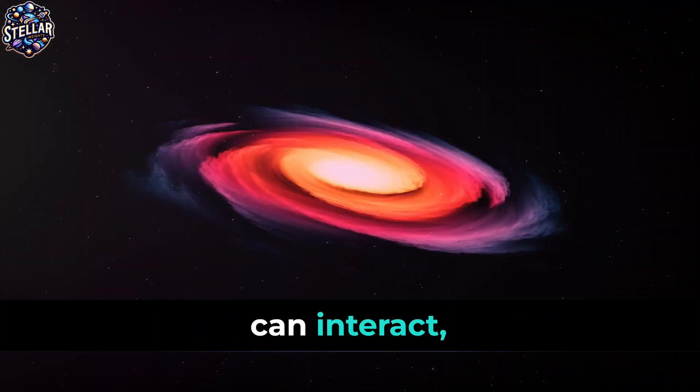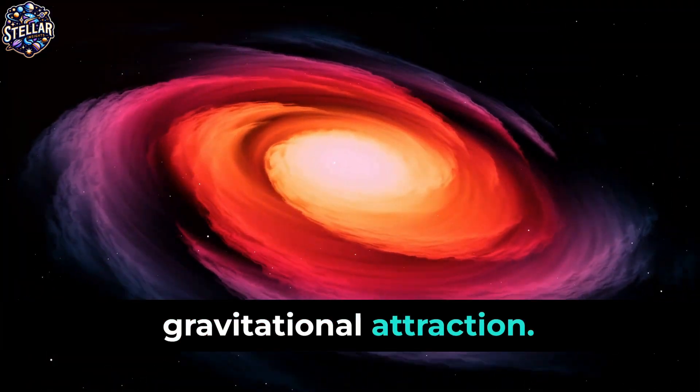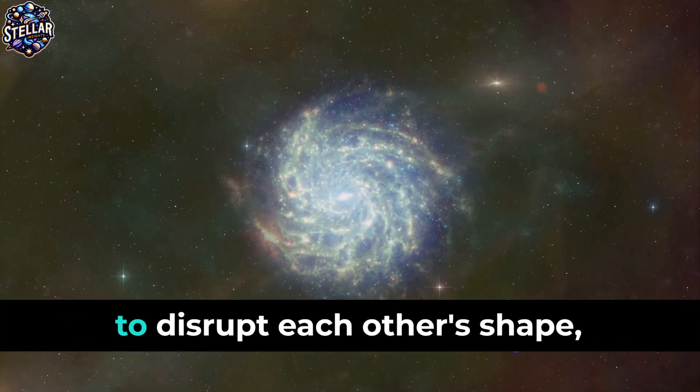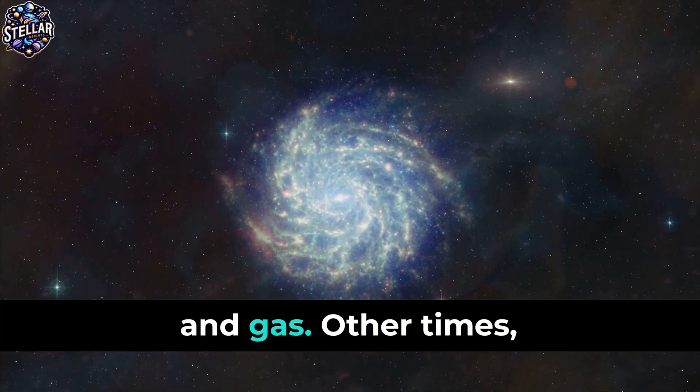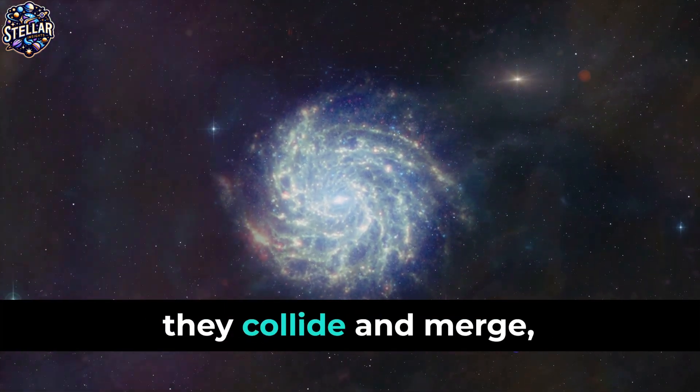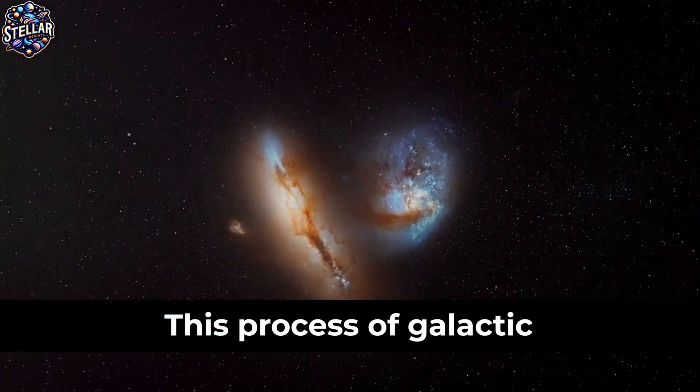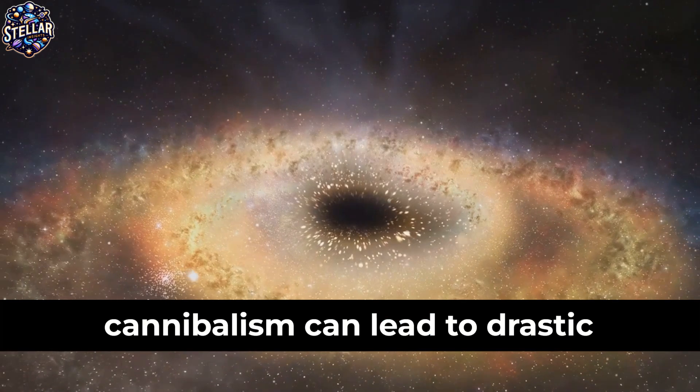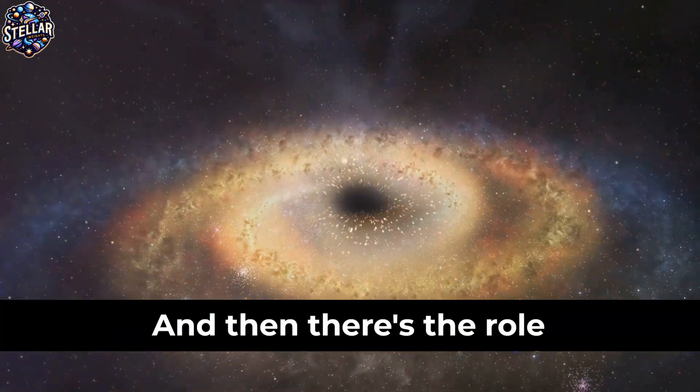Galaxies themselves can interact, drawn together by their mutual gravitational attraction. Sometimes they pass close enough to disrupt each other's shape, creating tidal tails of stars and gas. Other times they collide and merge, forming a new, larger galaxy. This process of galactic cannibalism can lead to drastic changes in a galaxy's structure and appearance.